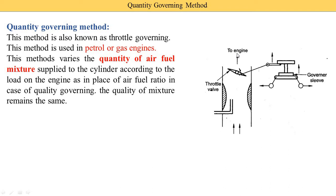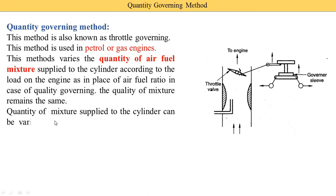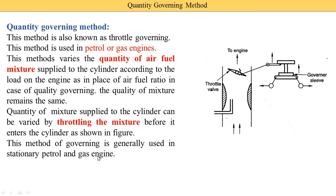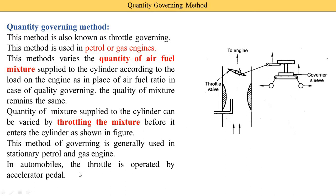But in a stationary engine we do not have an accelerator pedal, so depending on the load the governor is used. The quantity of mixture supplied to the cylinder can be varied by throttling the mixture before it enters into the cylinder, as shown in this figure — this is also known as throttling and is done by the throttle valve. This method of governing is generally used in stationary petrol and gas engines. In automobiles the throttle is operated by the accelerator pedal in a car, and simply the accelerator in a bike.